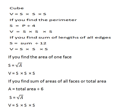If the question gives you the sum of areas of all faces, or total area, first find the area of one face by dividing the total area by 6. Then find the side by calculating the square root of that area. Then find the volume by multiplying side by itself by itself.